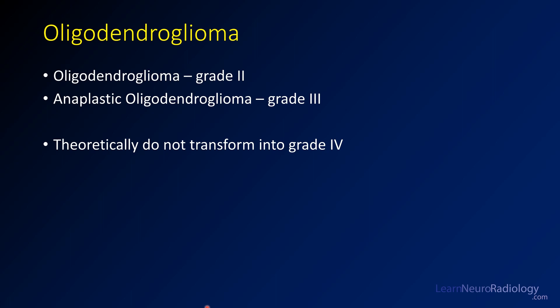Oligodendrogliomas come in two grades. You have the low grades, which are grade 2, simply called oligodendrogliomas. You have the grade 3s, which are more aggressive and have more aggressive histologic and imaging features. Theoretically, oligodendrogliomas do not transform into grade 4 astrocytomas or glioblastomas.